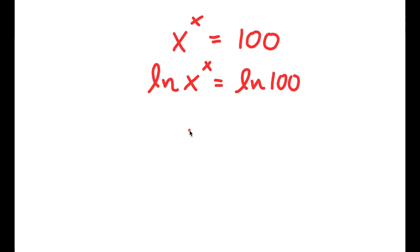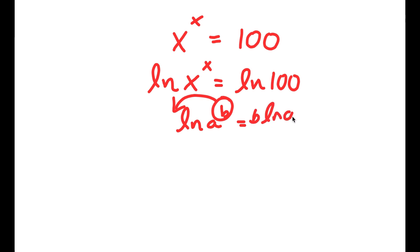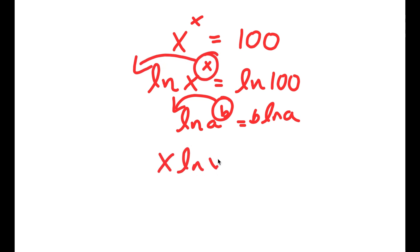Now, if I have something in the form ln of a to the power of b, I can move b to the front. So this is going to equal b times ln a. So for ln x to the power of x, I can move x to the front, and I get x times ln x is equal to ln 100.